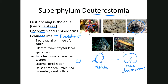These organisms have external fertilization, where the males release their sperm out into the ocean water and the females release their eggs into the ocean water, so fertilization occurs there. Some examples that belong to this phylum are sea stars, sea urchins, sea cucumbers, and sand dollars.